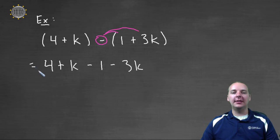This is definitely the right next step. So from here we have to simplify our answer. I see like terms of the four and the negative one, the two constants. Four minus one gives me three.